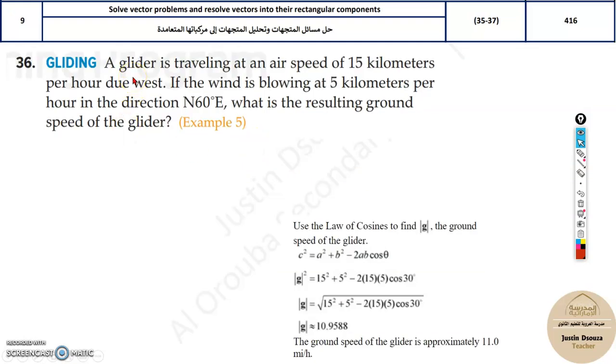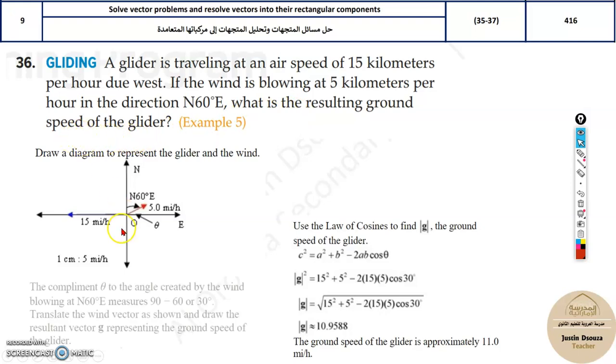Let's solve some other problems. A glider is traveling at an airspeed. A glider is one that glides in the sky at an airspeed of 15 kilometers per hour due west. Let's see the diagram. East, west, due west. This glider is traveling at this particular speed. If the wind is blowing at 5 kilometers in the direction of N60°E, it's in the opposite direction now, this side. What is the resulting ground speed of the glider?